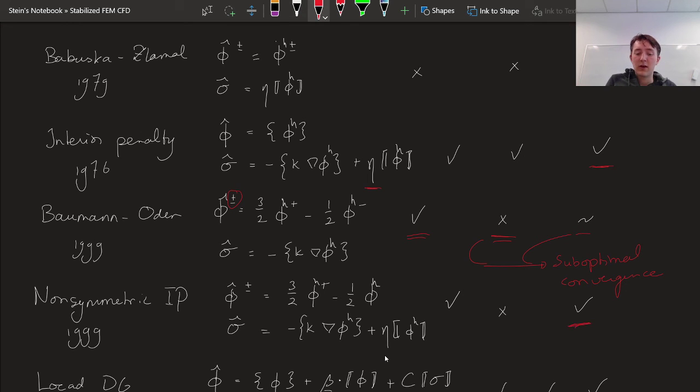Yeah, so they kind of got away, or they managed to get rid of the stability parameter eta, but as a result, their scheme has other defects. Now, the non-symmetric interior penalty method is again trying to fix now the Bauman-Oden method by adding a certain penalty. So they tried to fix the Bauman-Oden method by adding a penalty term, which kind of seems strange because that was the whole point of the Bauman-Oden method. But there was actually a very minor restriction in terms of the parameter eta here in order to make this a stable method.